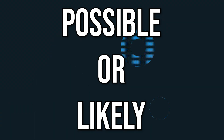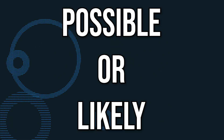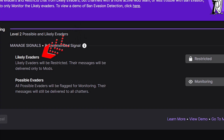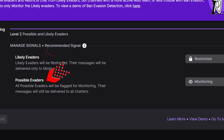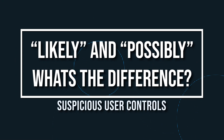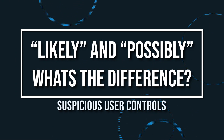When it comes to this brand new ban evasion detection AI, users will be put into two categories: possible or likely channel ban evaders. By default, likely evaders will be put into restricted mode and possible evaders will be put into monitoring. So let's answer one of the big questions you're probably asking: what is the difference between likely and possibly suspicious users?